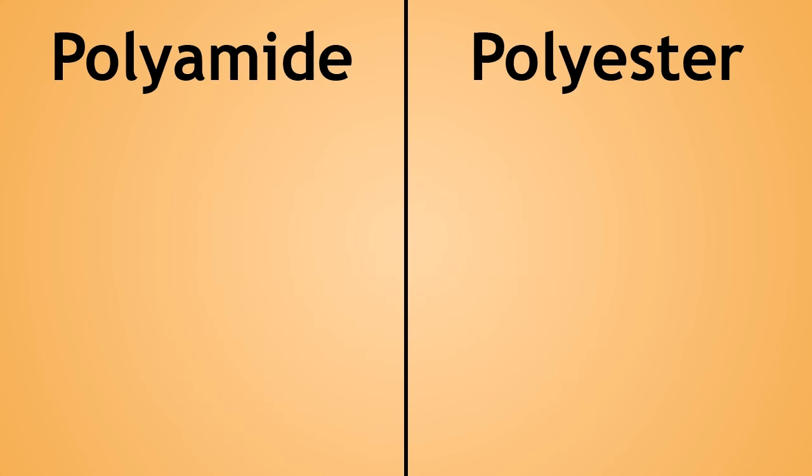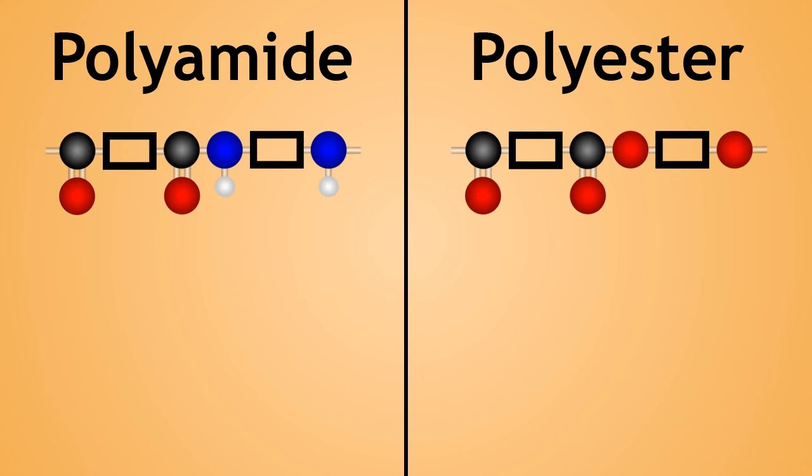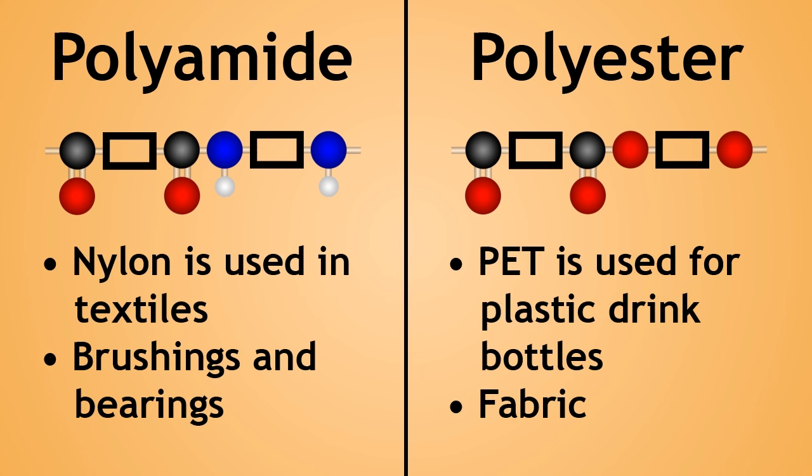Now, at the end of this tutorial, you should understand what condensation polymers are, and be able to give examples of polyesters and polyamides along with their uses.